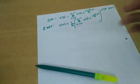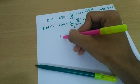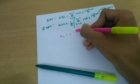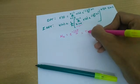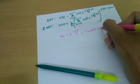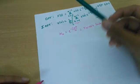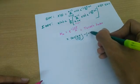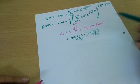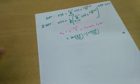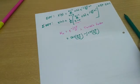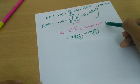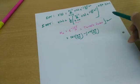Now let us define something important called the twiddle factor, denoted by W_N. The twiddle factor is e raised to minus j 2 pi by N. Using Euler's identity, this can also be written as cos(2 pi by N) minus j sin(2 pi by N). Please remember this twiddle factor — we will be exploring its properties and you will encounter it extensively in Fast Fourier Transform.